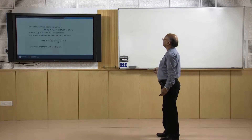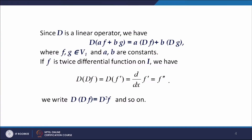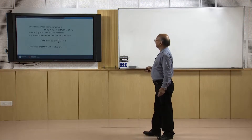Since D is a linear operator, for any two functions f and g in B₁ and constants a, b: D(af + bg) = a·Df + b·Dg. If f is twice differentiable, we write D(Df) = D²f = d²f/dx², which equals f''(x). This way we can define higher order derivatives of f with respect to x.